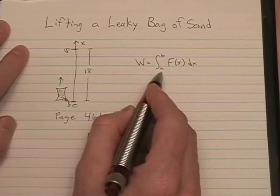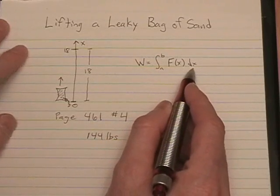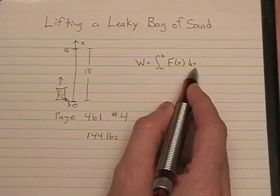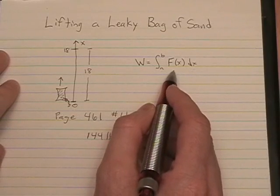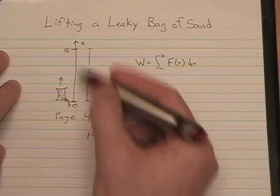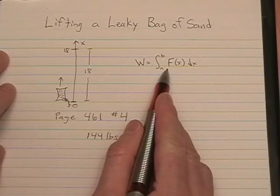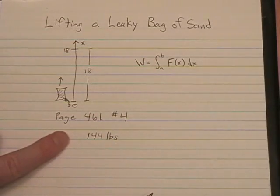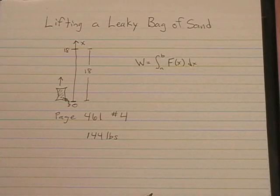The limits of integration a to b correspond to the distance at which the force is applied. So a and b are our distances on our picture. f of x is our force expression at any given time over the course of that distance.